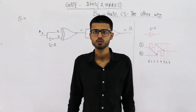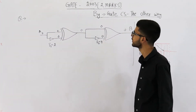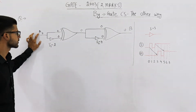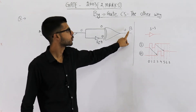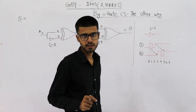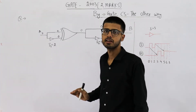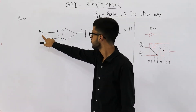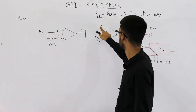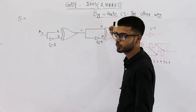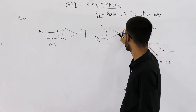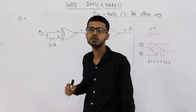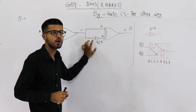Hello students, welcome back. This is a question from the GATE 2003 exam worth two marks. They have given you this diagram — the input to this circuit is A and the final output is B. Initially, at time equal to zero, each and every wire contains logic level zero, meaning voltages are low. Both inputs are low, both inputs of the XOR are zero, so the output is zero. These elements are non-inverting buffers, not NOT gates.